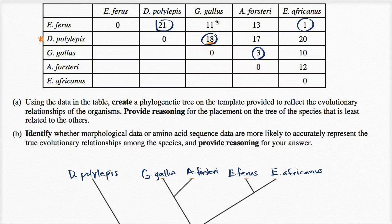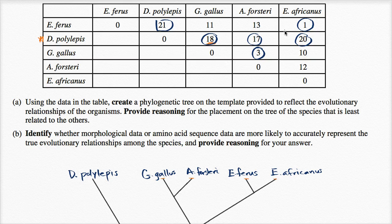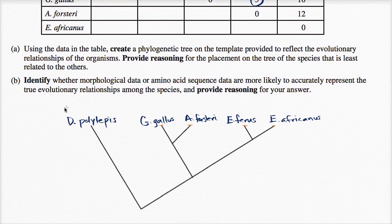18 difference with G. gallus, 17 difference with A. forsteri, and 20 amino acids are different in the sequence for cytochrome C between D. polylepis and E. africanus. So, this has the most differences.